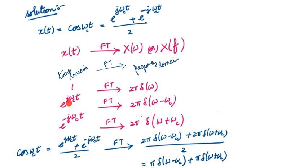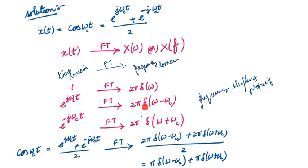What about e^(jωct)? We are using a property known as the frequency shifting property. For e^(jωct), since the FT of 1 is 2π·δ(ω), an exponential in the time domain results in a shift in the frequency domain. So ω gets shifted to ω − ωc, giving 2π·δ(ω − ωc). Similarly, for e^(-jωct), the Fourier transform is 2π·δ(ω + ωc).